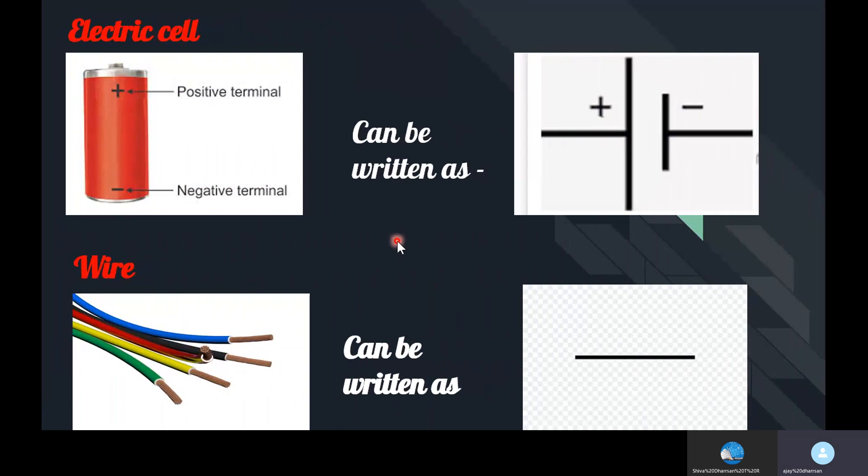Electric cell: the symbol for electric cell can be written like this. The longer line represents positive terminal and the smaller thick parallel line represents negative terminal. You have a mark in the electric cell: plus means positive terminal, minus means negative terminal.